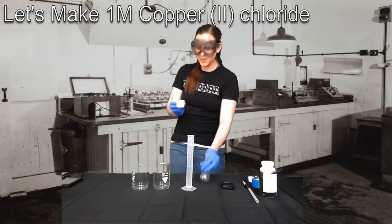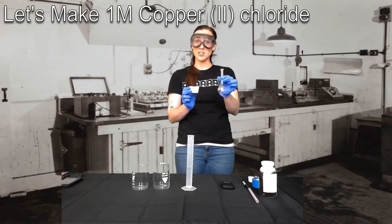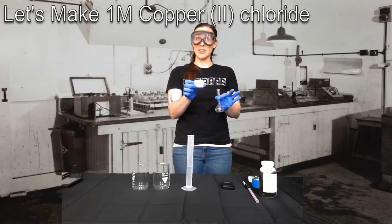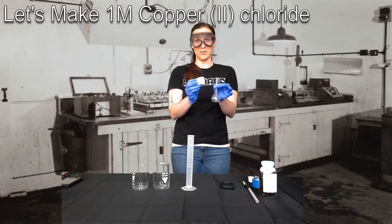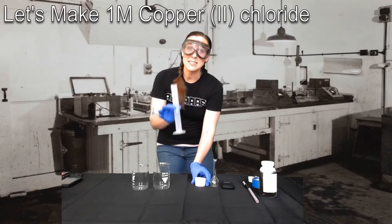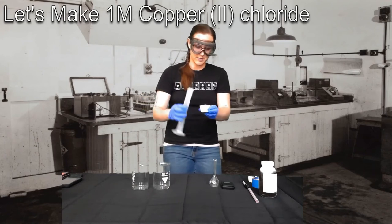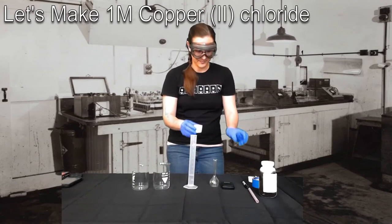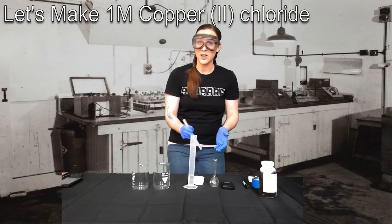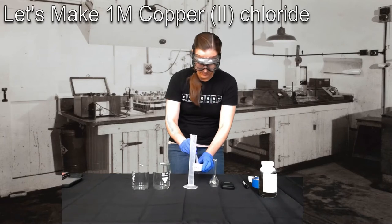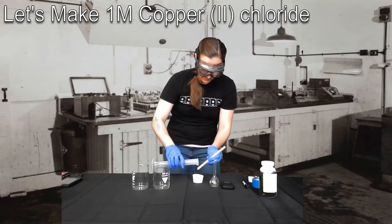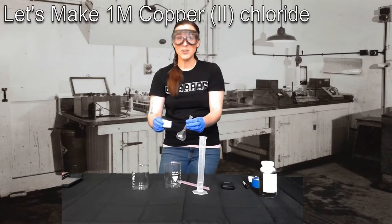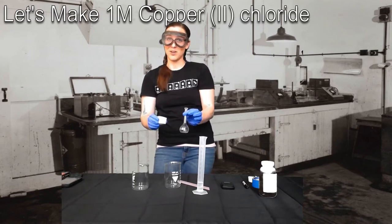Now you might be wondering, how am I going to get all of this solid CuCl2 into this little tiny volumetric flask? The easiest way to do that is to make a type of slurry of what's in the weighboat and then add that to the volumetric flask. The way we're going to do that is by adding some DI water, deionized water, into the weighboat, just so that it can get into a little bit of a solution and make it easier for us to add it into the volumetric flask.